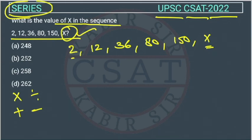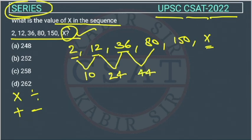See that first term is 2, second is 12. What is the difference here? The difference of 10. Now what is the difference between second and third? The difference is 24. We will similarly find the difference of this term, the difference is 44.